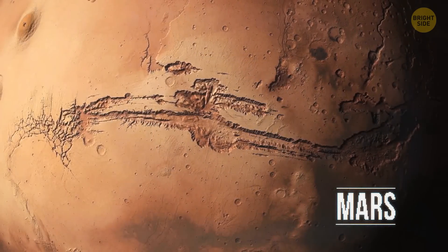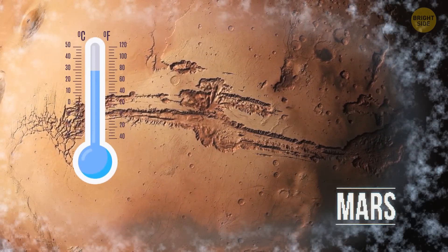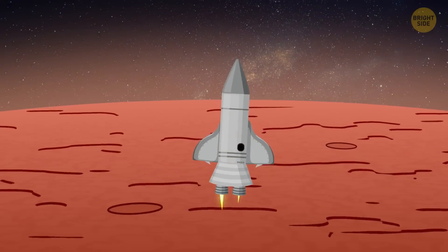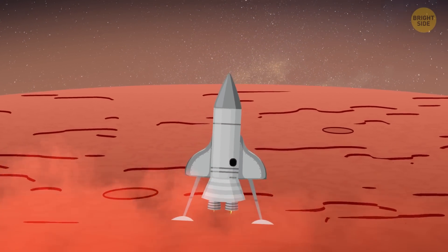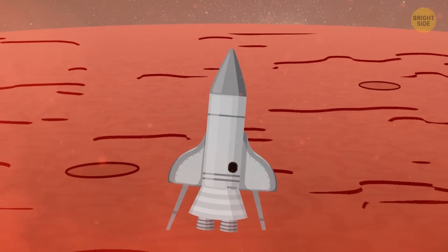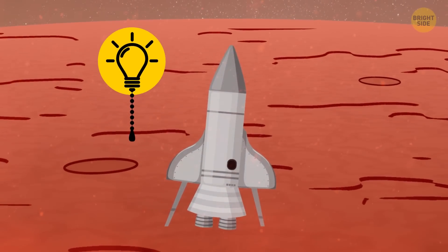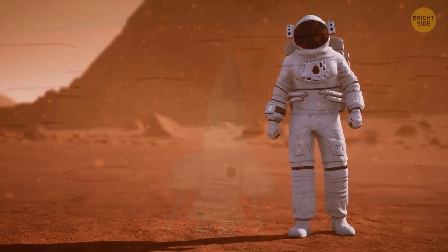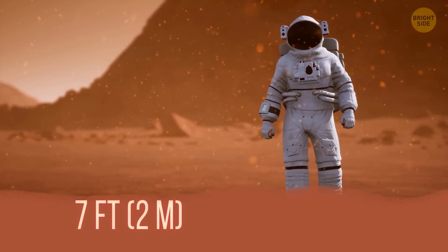Whew! The place is freezing cold! The temperature is minus 80 degrees Fahrenheit. The planet looks reddish, and as soon as you make your first step on its surface, it becomes clear why. The ground's covered with rusty-colored dust. Its fine particles are also floating in the air around you. In most places, that dust layer is 7 feet thick.